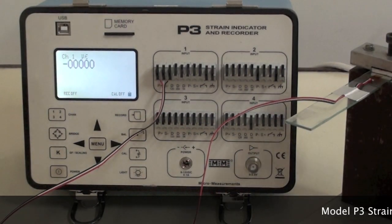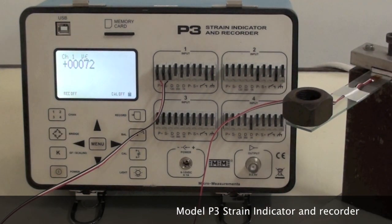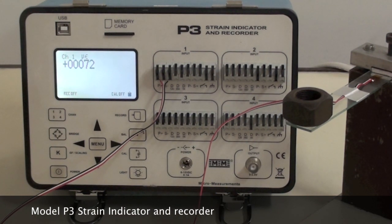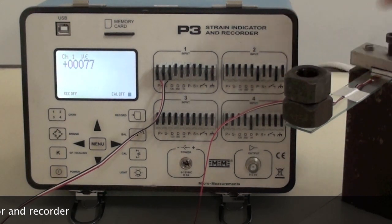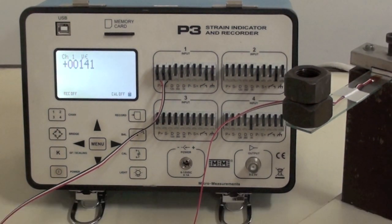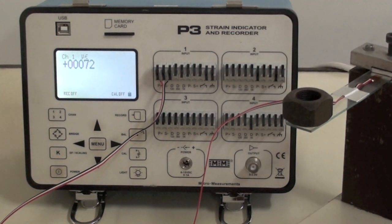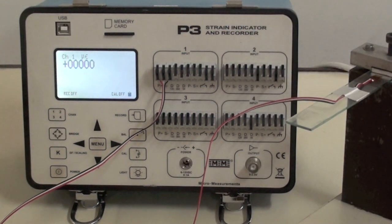The gauge is connected to a model P3 strain indicator and the beam is loaded to see if gauge installation is satisfactory. An unchanging zero after balancing the reading, stable and repeatable readings of strain under load, and a good return to zero when unloaded indicates reliable strain gauge installation.